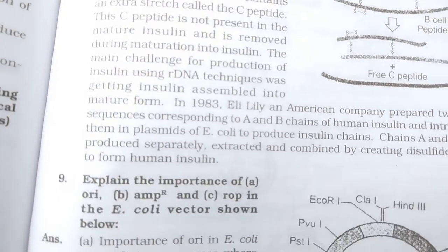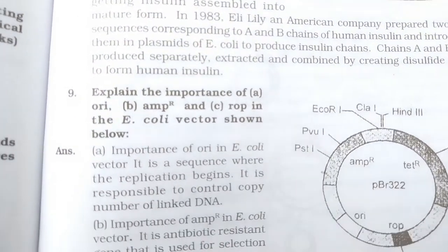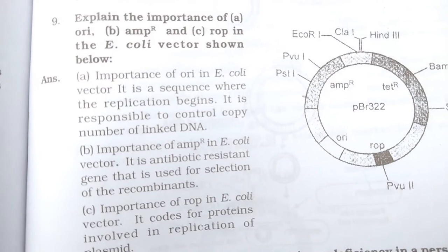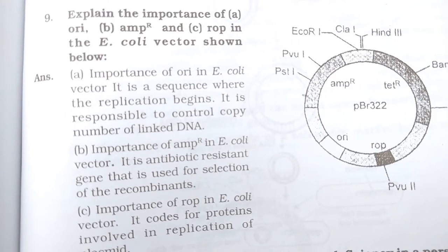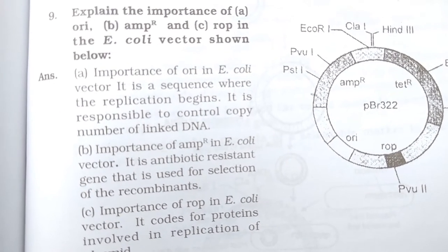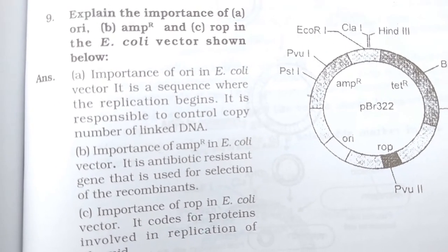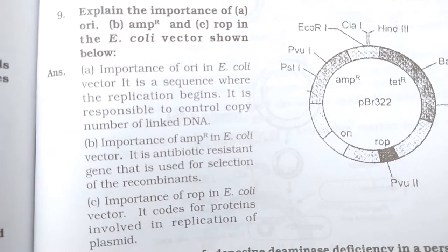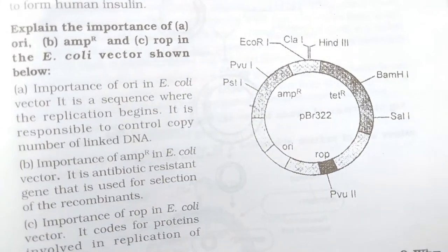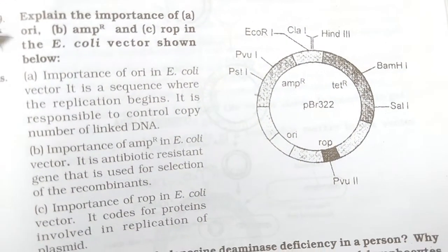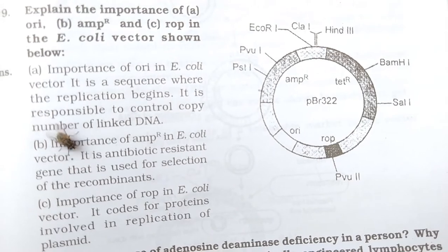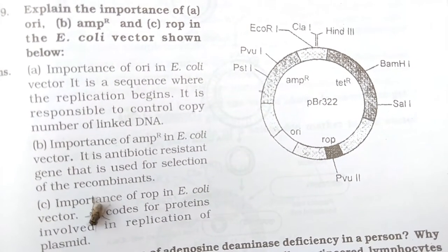The next question asks you to explain the importance of ampicillin resistance in cloning vectors. This diagram has been covered during teaching — it is very important. This is how you have to answer this question.